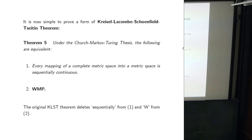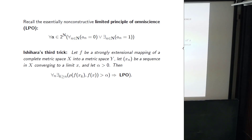Hajime proved a simple form of the Kreisel-Lacombe-Shoenfield-Tseitin theorem. Under the Church-Markov-Turing thesis, every mapping of a complete metric space into a metric space is sequentially continuous, which is equivalent to the weak Markov principle. The original KLST theorem deletes 'sequentially' from the mapping statement and 'weak' from Markov's principle. Hajime established this slightly weaker form by much simpler means than anything previously known.